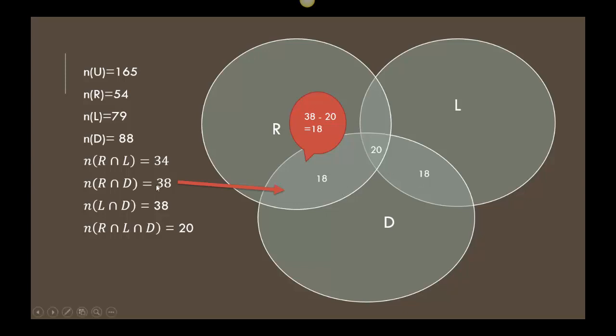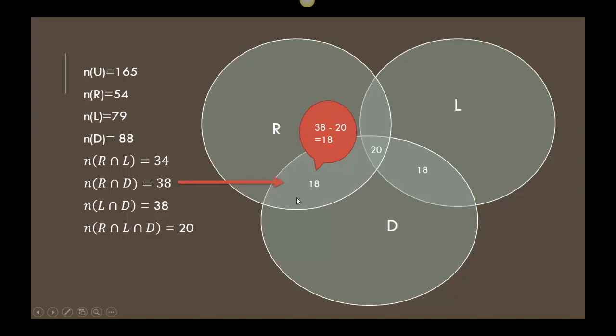Same thing happens with R and D. So I already have the 20. I subtract the 20 from the 38 and it gives me 18. So I'm going to do that once again. As I move up, I'm going to do 20 from the 34 and it's going to give me 14. So first step was to put in 20 and then the next three steps I subtract the 20.